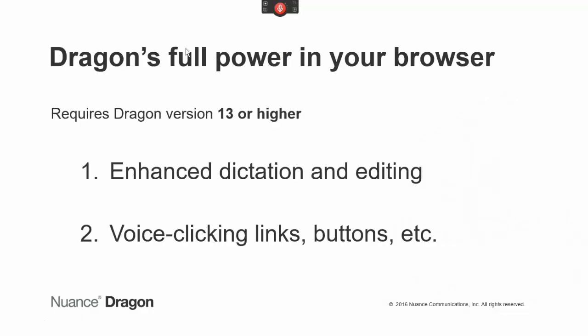If you have Dragon version 13 or higher, adding the Dragon Web extension gives you Dragon's full functionality in Chrome. After enabling the extension, you'll be able to dictate text and edit it by voice, and also use your voice to click links and other objects on web pages.